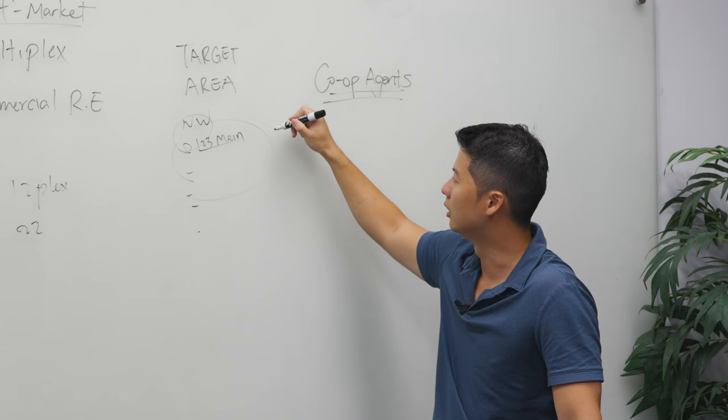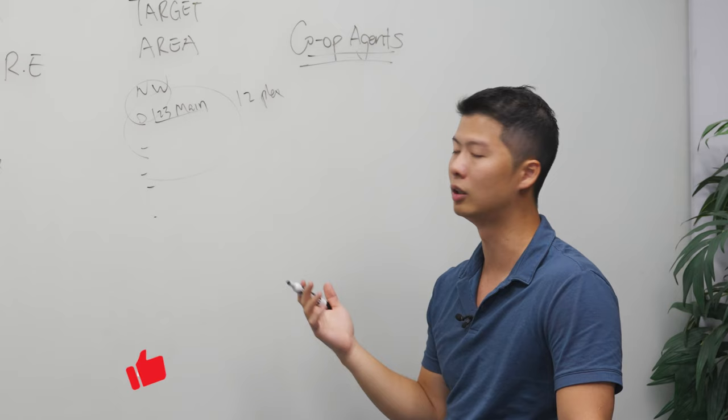So from there, you typically will understand that this might be a 12-plex, and the agent might say, hey listen, yeah, I've been talking to the owner, they don't have any plan to sell, they just did a couple different renovations.